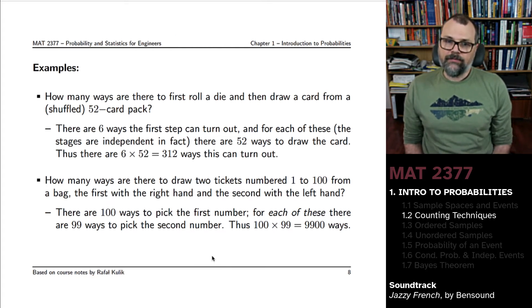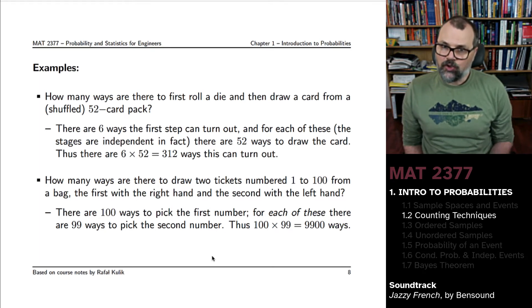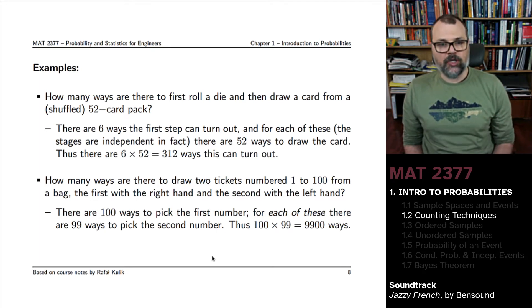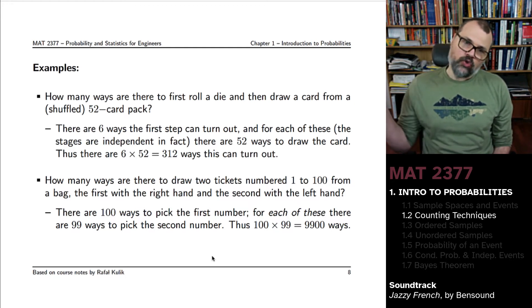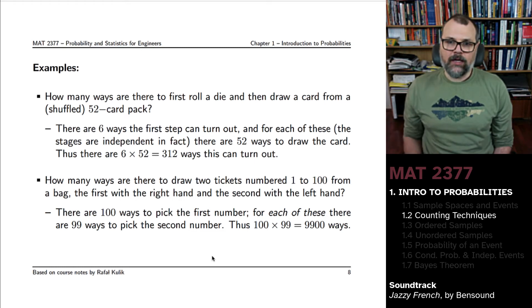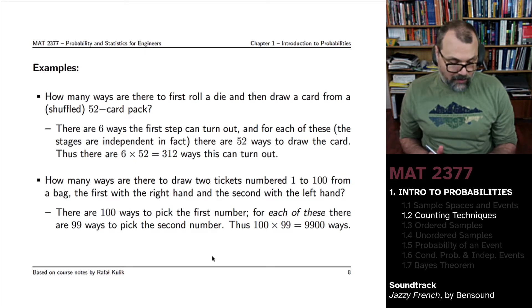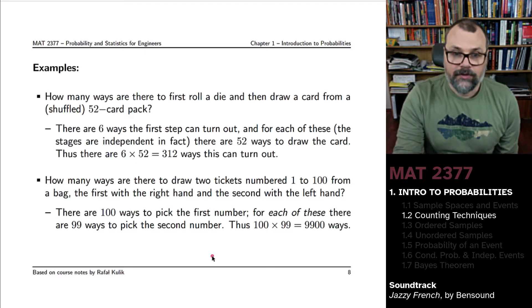Slightly different question. How many ways are there to draw two tickets numbered 1 to 100 from a bag? Assuming you draw the first one with the right hand and the second one with the left hand. Well, you have, as before, this tree structure.